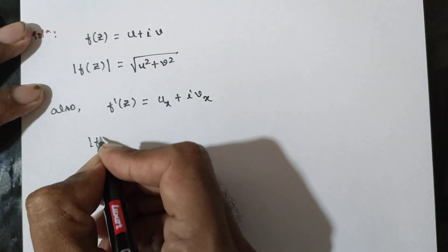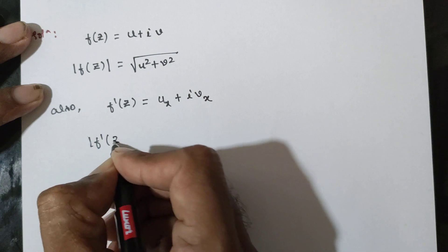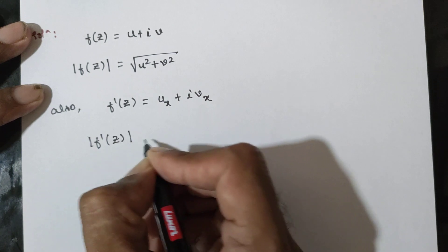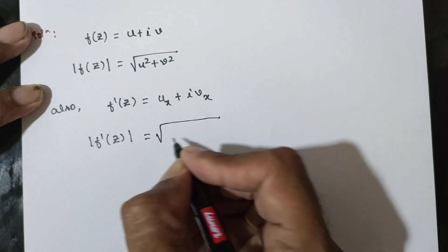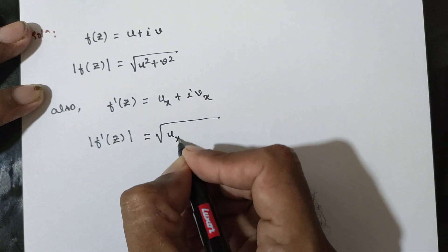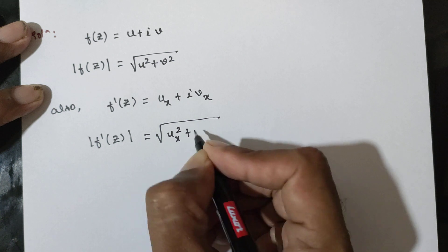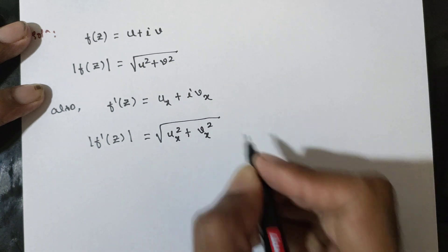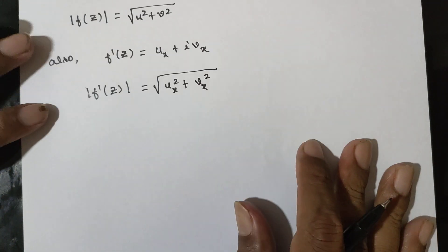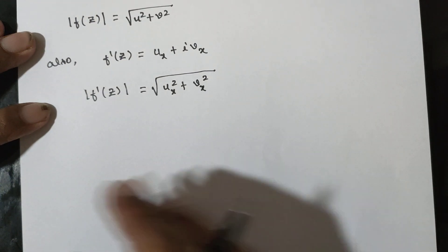Therefore, the magnitude of f dash of z whole square is equal to ux square plus vx square.